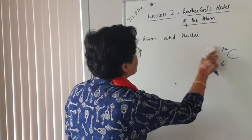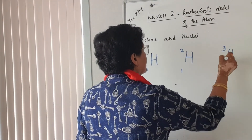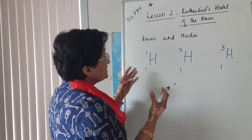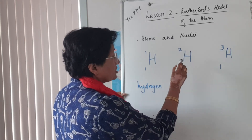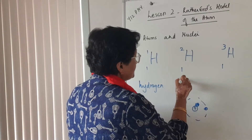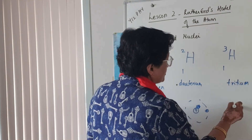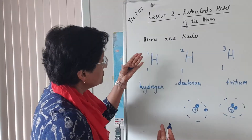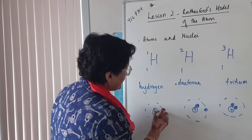Another interesting example is isotopes of hydrogen — the lightest of all elements. Ordinary hydrogen has just one proton in its nucleus and nothing else. Then there is deuterium, which has one proton and one neutron in the nucleus, with one electron outside — the word 'deut' means two. Then there is tritium, which has one proton and two neutrons in the nucleus. They all have one electron, because for a neutral atom the number of electrons equals the number of protons.